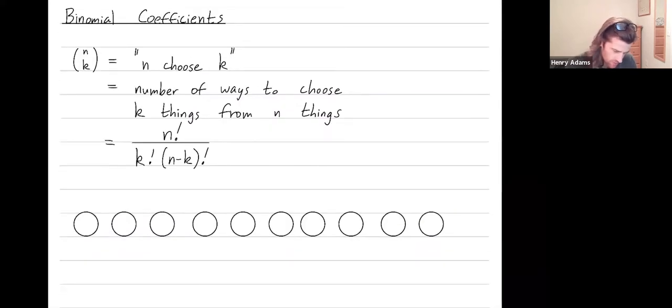Let me briefly try to explain this formula. It may look a little strange at first. It's not even clear that this is always an integer, right? We're dividing by k factorial. We're dividing by n minus k factorial. It's not even clear that you always get an integer, but you do.